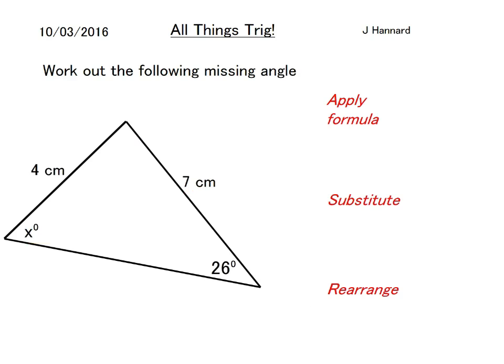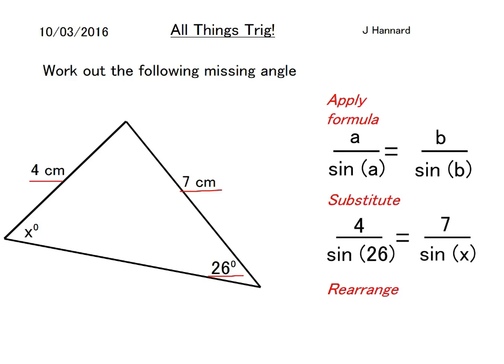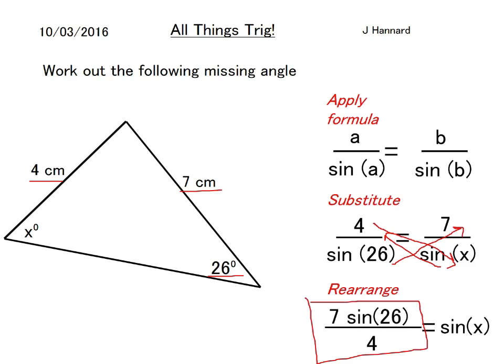Here's another one. We've been given two sides, 4 and 7, and an angle of 26. Apply your formula a over sine a equals b over sine b. Substitute your numbers in. Take that sine x up there, move the 4 in the opposite direction down there, and the sine 26 up there to get sine x on its own. Type that into your calculator making sure it's in degrees.